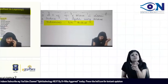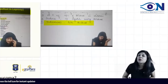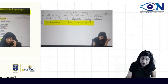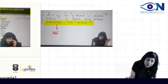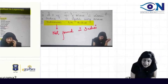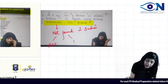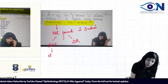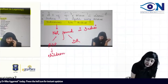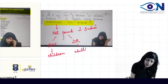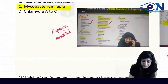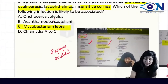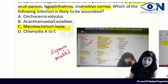Another important point: Onchocerciasis is actually not found in India. When I taught you the Vision 2020 program, onchocerciasis is part of that program but is not found in India. So instead, what we consider in India is retinopathy of prematurity and diabetic retinopathy — retinopathy of prematurity in children and diabetic retinopathy in adults.